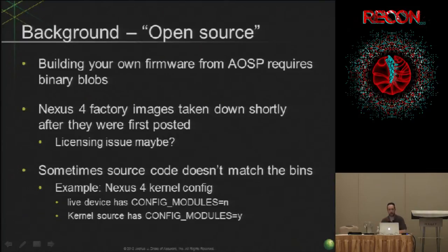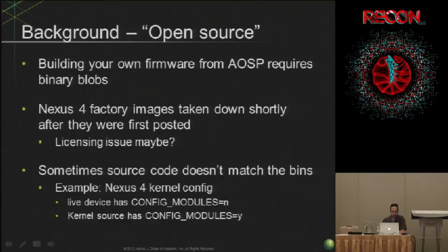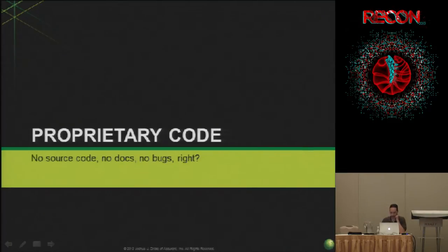If you've ever tried to build a firmware image for an Android device from AOSP, like a Nexus device, you'll find that you actually have to go download these binary drivers and stick them in some magical directory in the build tree, and they get slipstreamed in during the build. There were weird things in the past — the Nexus 4 had Jellybean 4.2 released, then the binary and factory images all disappeared one day, second day they were up. Nobody knows why. Also the live Nexus 4 device has modules disabled, which is smart for security, but the kernel source they ship doesn't have that configuration — not really in line with open source.